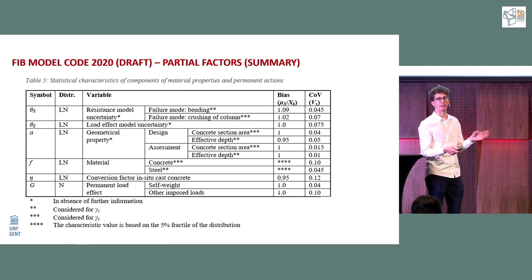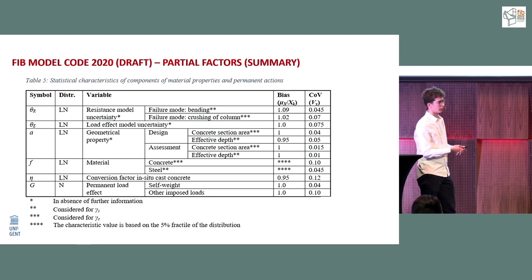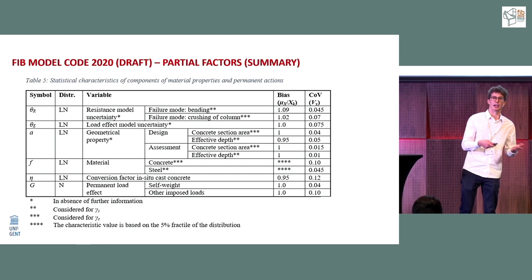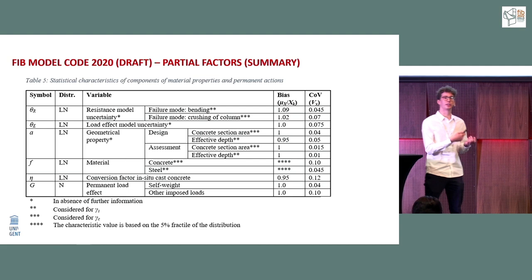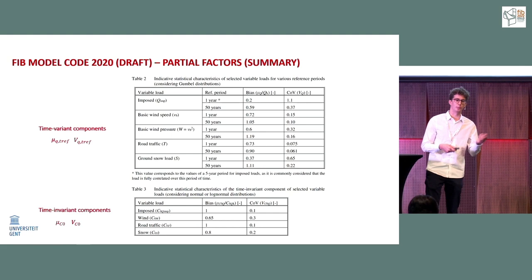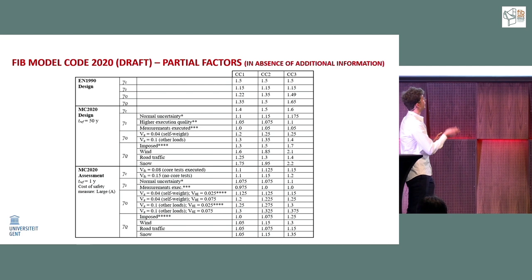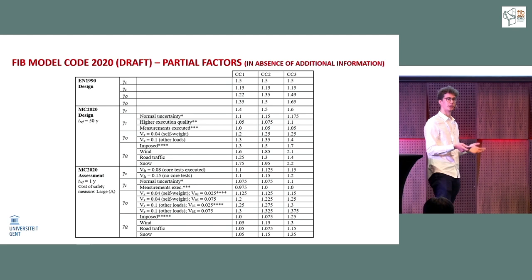The Model Code also provides reference values for all parameters. For material characteristics, reference values are given — but if you perform site measurements and have better knowledge of uncertainty for a given parameter, those measured values can be used instead. Reference values are also given for loads, covering both time-variant and time-invariant components. Using all these reference values, you can then determine the corresponding partial factors from a single consolidated table, applicable when no additional information is available.